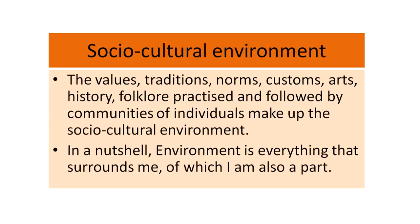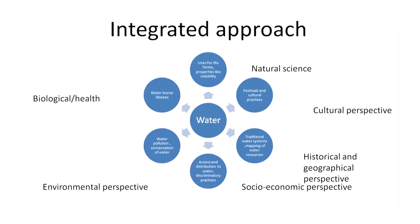So in a nutshell, environment is everything that surrounds us and we are part of the environment. In the earlier presentation I tried to explain how one particular concept is observed through different aspects of the environment. To elaborate it more, let's take the example of water. From the natural aspect, I will say properties of water, bonding of water, uses of water as a life form. Properties like solubility, floating, and density — these all include the natural aspect of water.